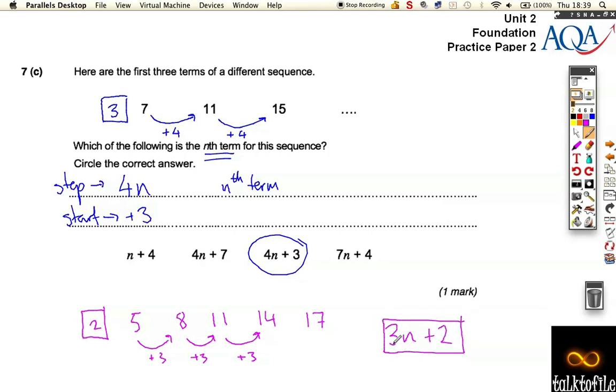The step or the jump always goes along with the n or whatever letter. And then where you start before is the bit that you add or subtract on the nth. You might need to go over this or we need to look that back up in your revision guide just to check you understand that.